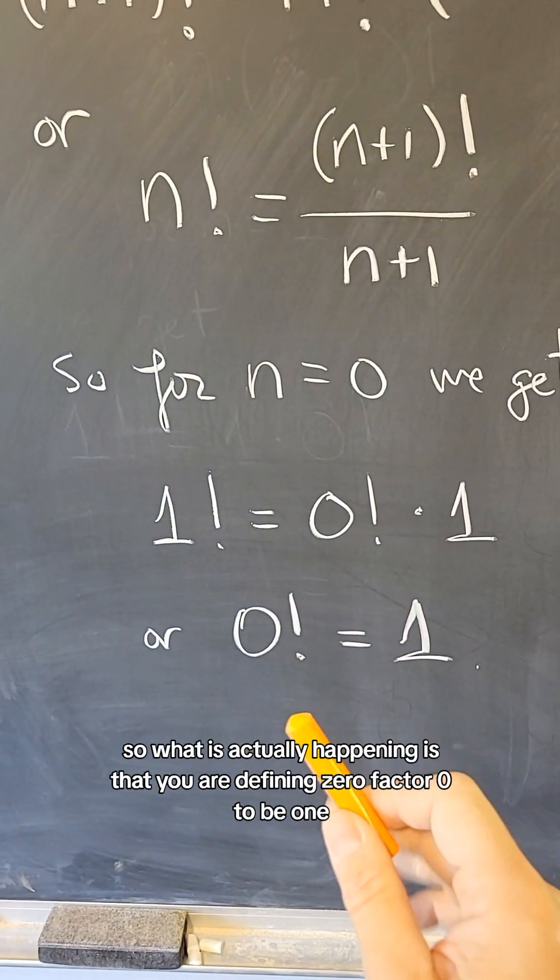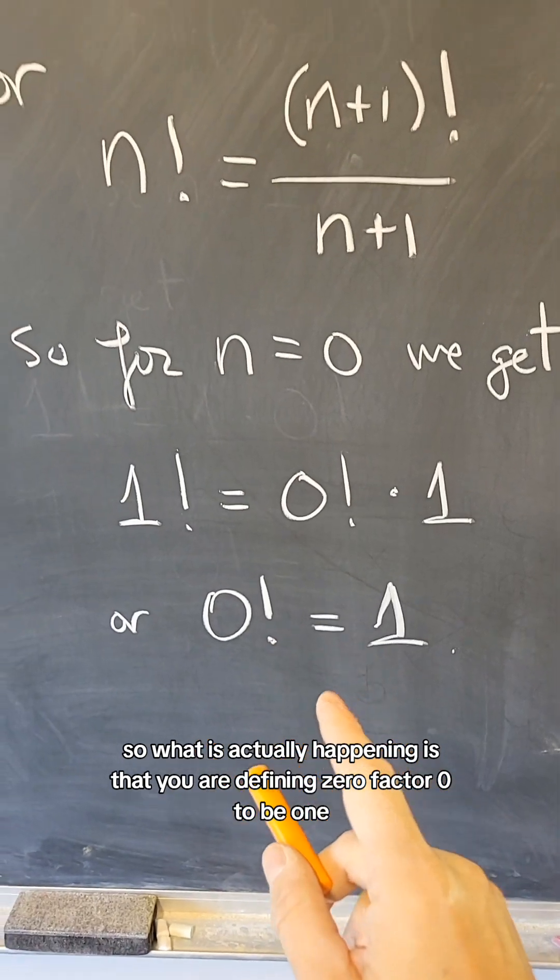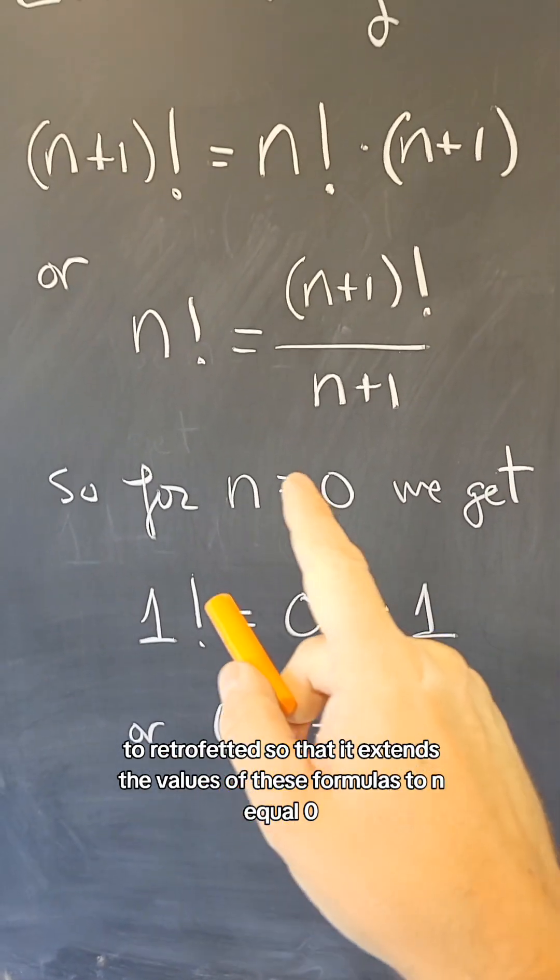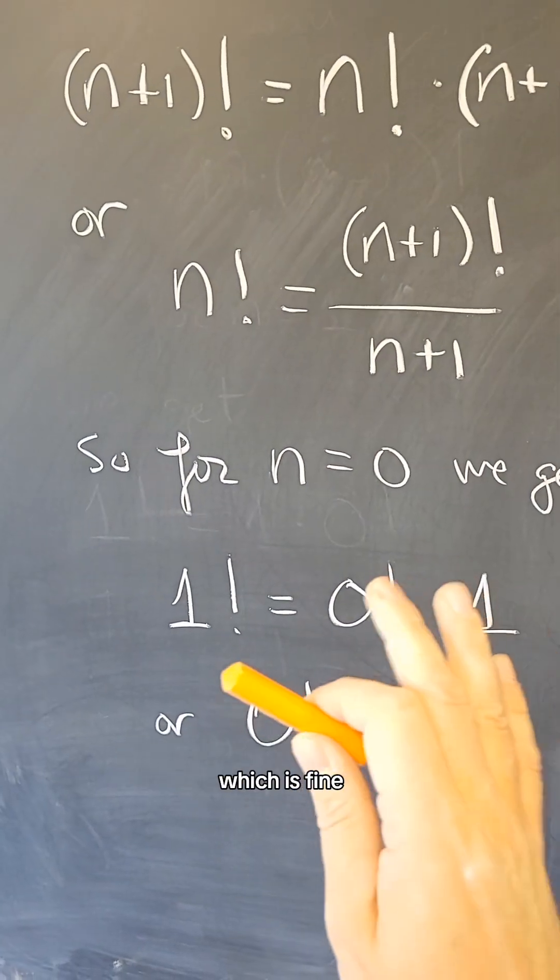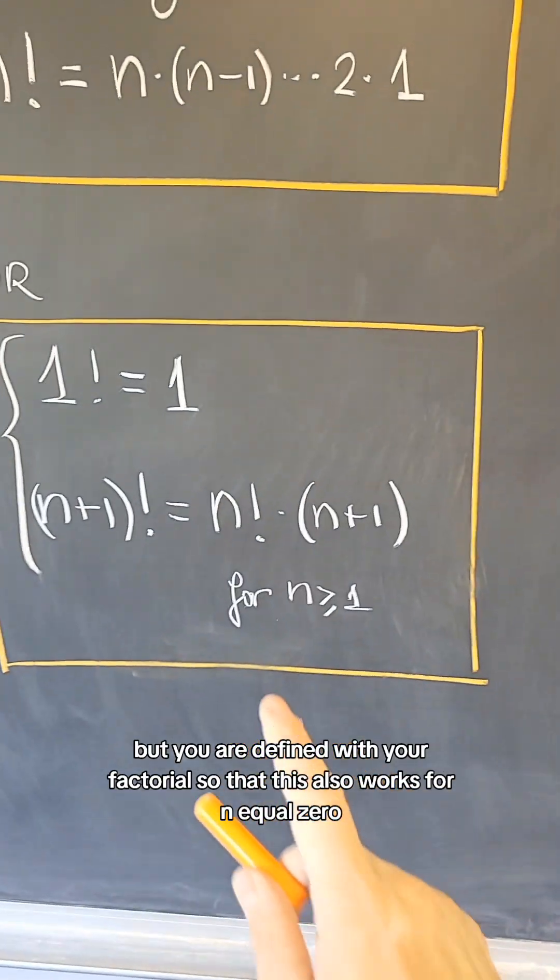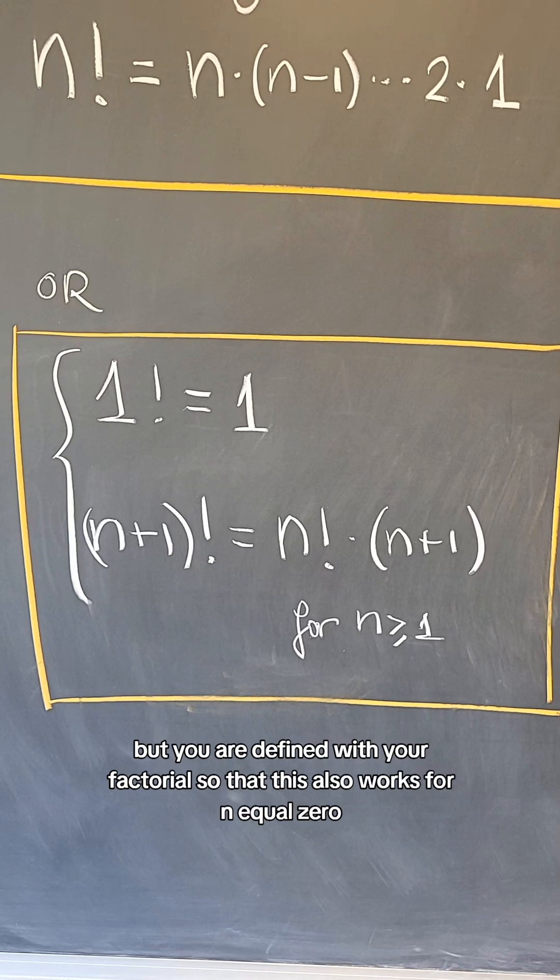So what is actually happening is that you are defining 0 factorial to be 1 to retrofit it so that it extends the values of these formulas to n equals 0, which is fine, but you are defining 0 factorial so that this also works for n equals 0.